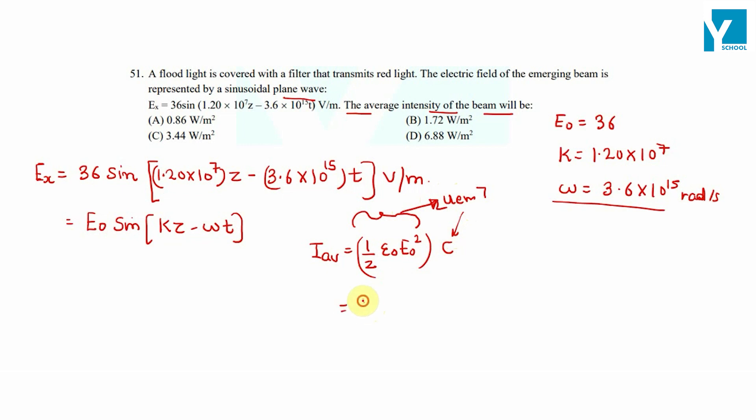So simply we will plug in: half times c value 3 × 10^8 times ε₀ which is 8.85 × 10^-12 times E₀² which is 36².